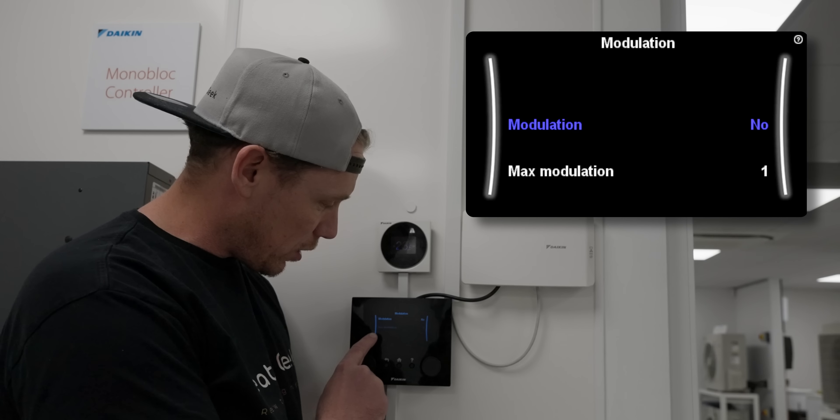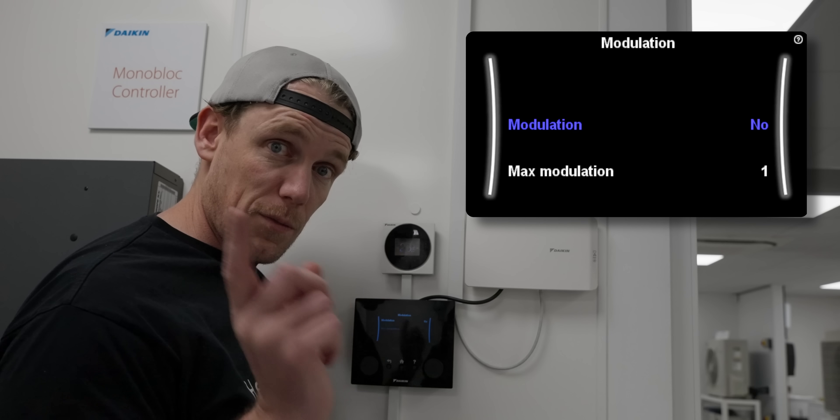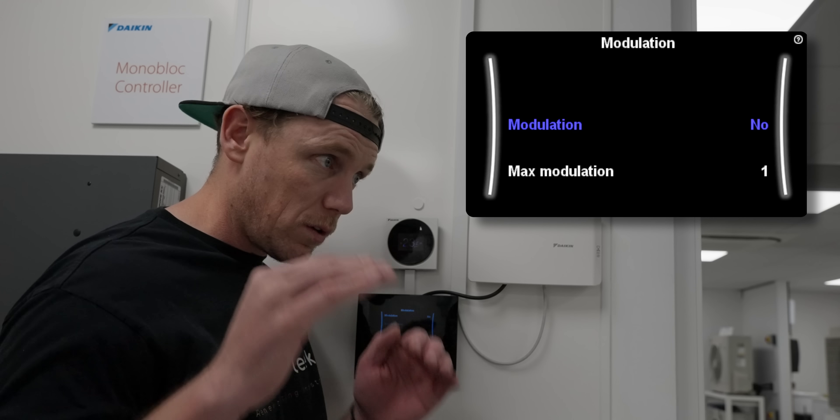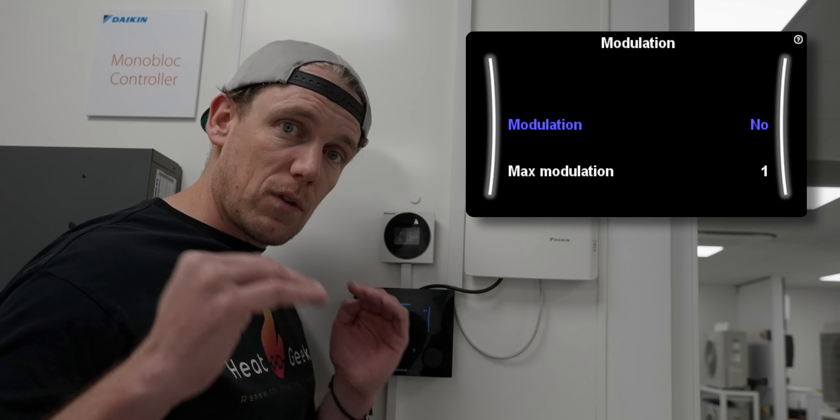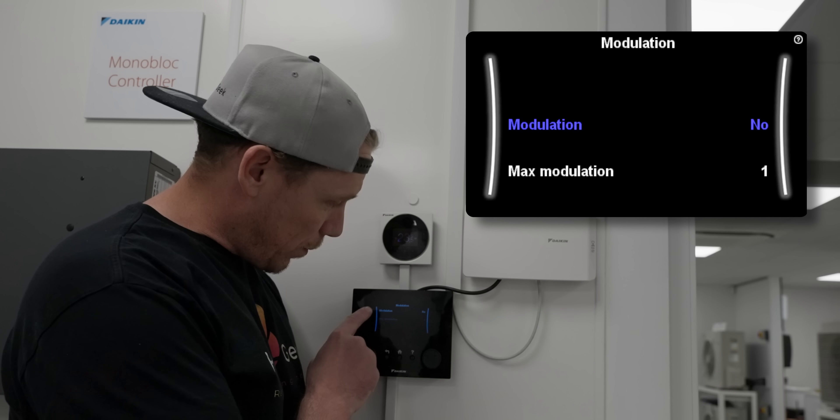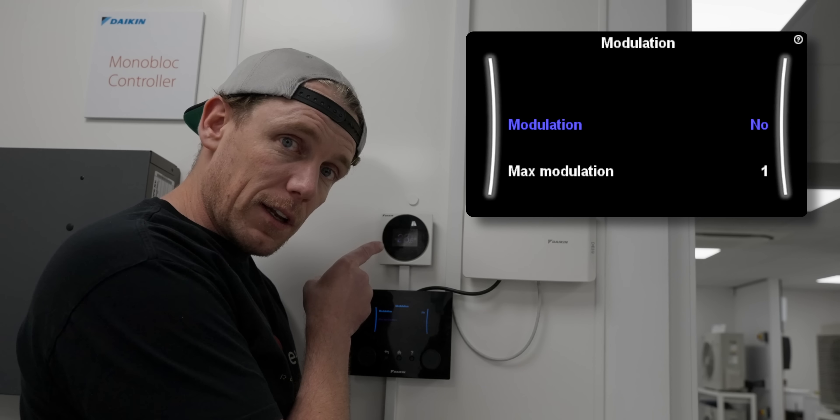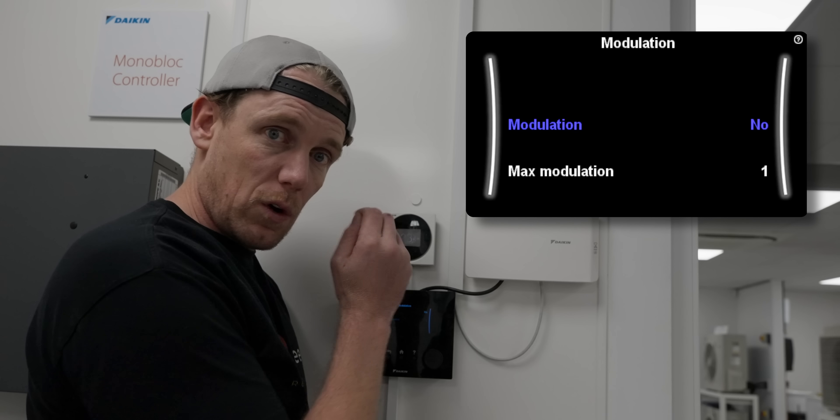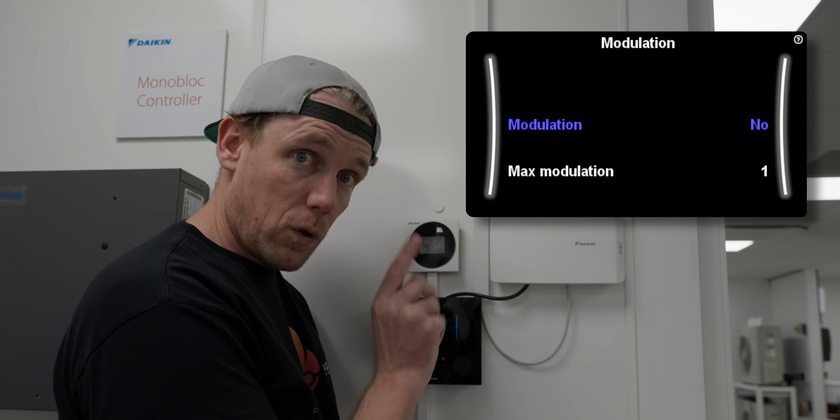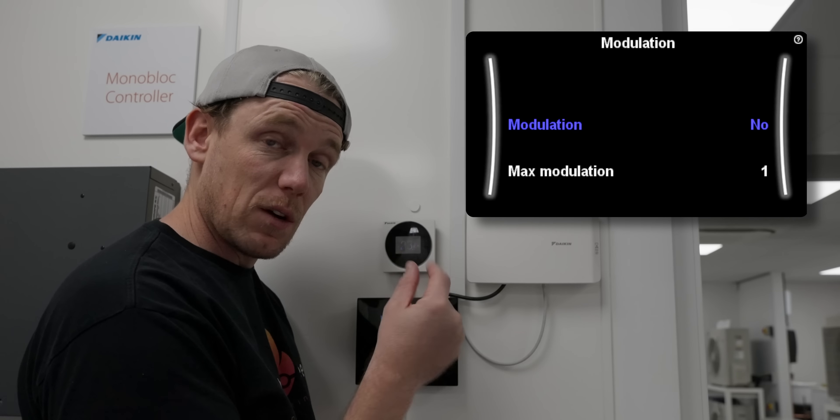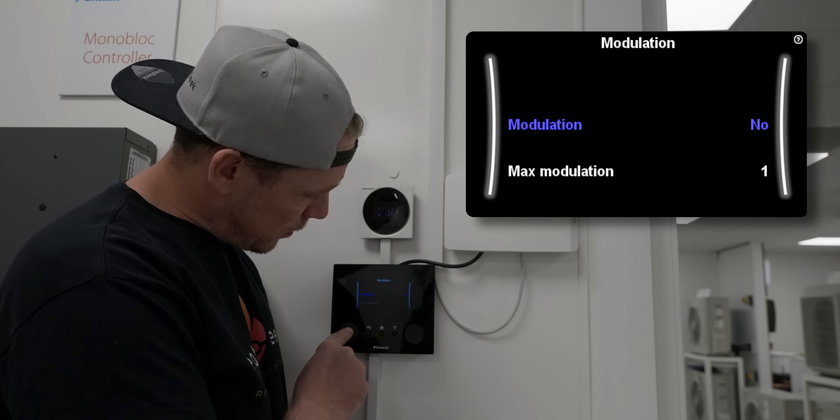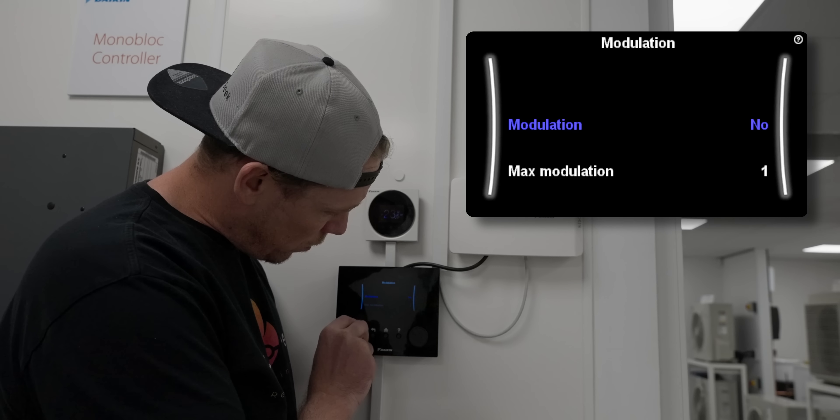Modulation is where, if you don't have room thermostats already everywhere indoors to give some sort of internal reference on your heating, we might want to use the Daikin internal controller. Has to be the Madoka or the air sensor, which is just literally a sensor with no interface.